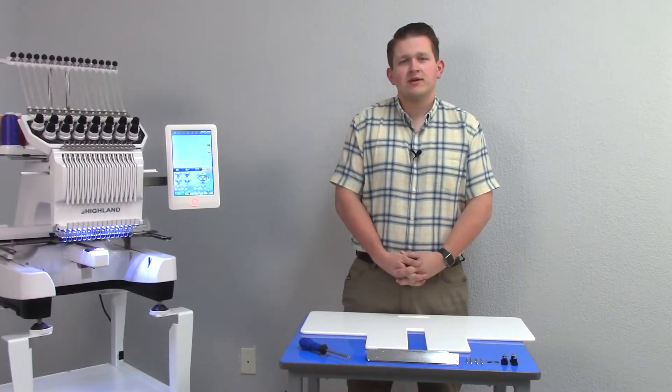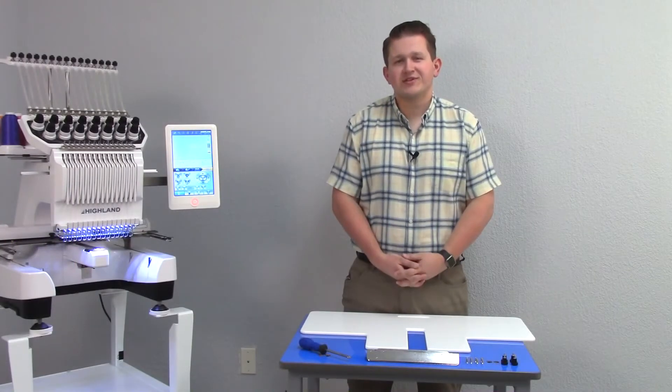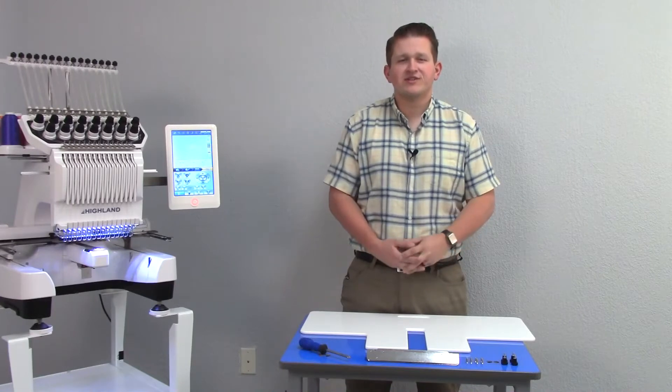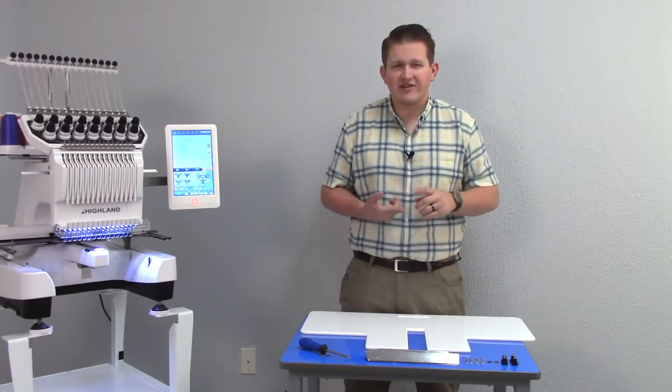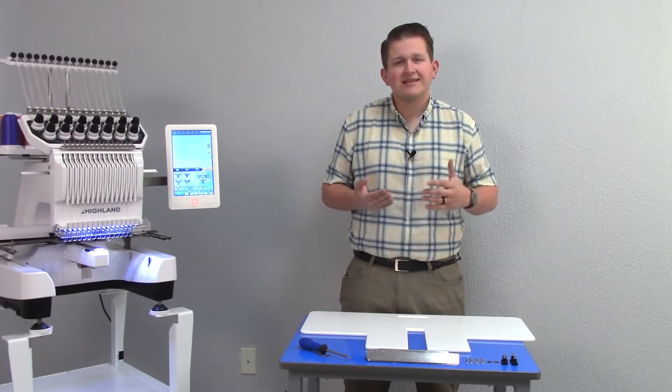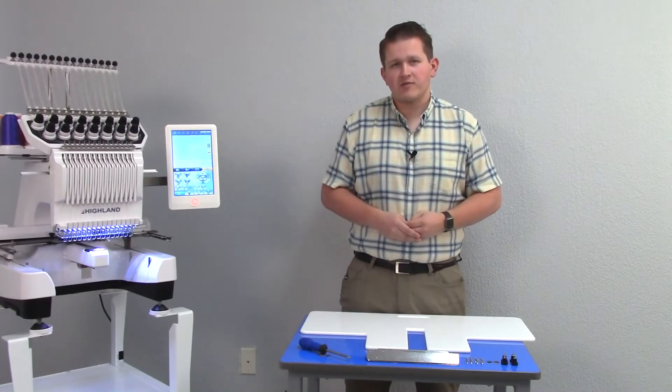In this video, we'll walk you through how to install the table on your Highland 1501 Breeze embroidery machine. The table top is a great accessory which can be added to the front of your machine when sewing on heavy materials such as heavy jackets, blankets, towels, anything that's going to add a lot of weight to the front of the machine.